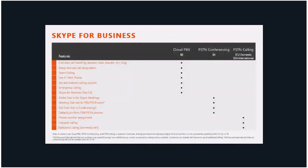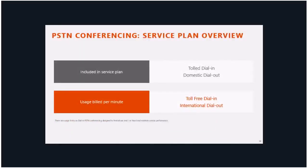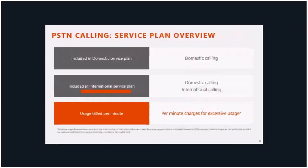That covers up to 3,000 minutes a month. If customers already have Office 365 and want to just add cloud PBX, PSTN conferencing, or PSTN calling, those plans are available as standalones. Customers who say 'I'm already on Office 365 and just want to add a couple more features' can mix and match as they like. With PSTN conferencing as an included service plan, they get toll dial-in and domestic dial-out.